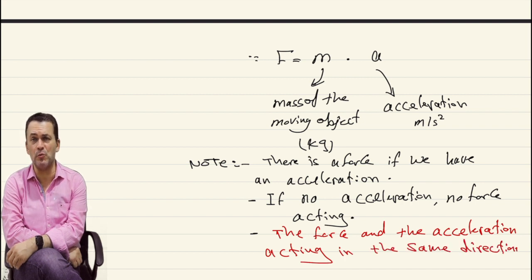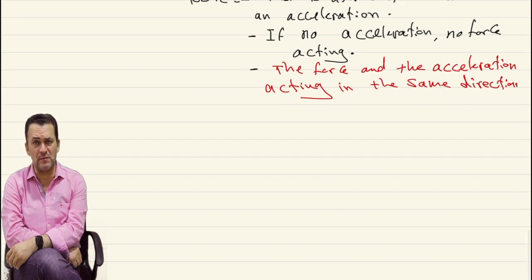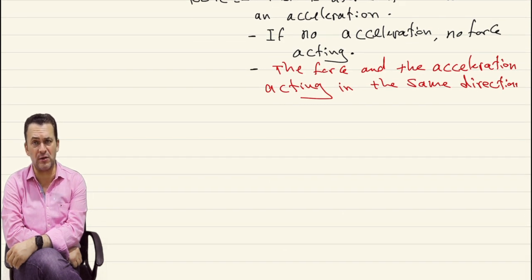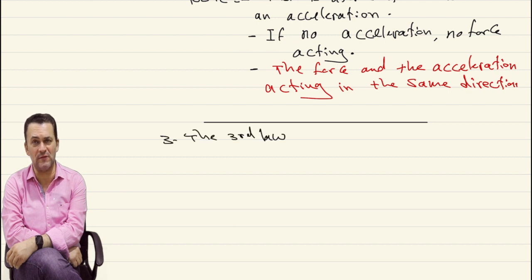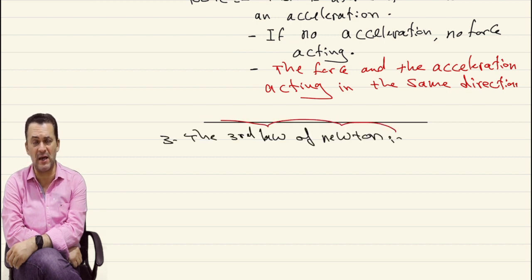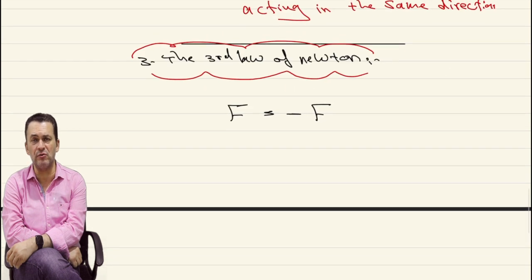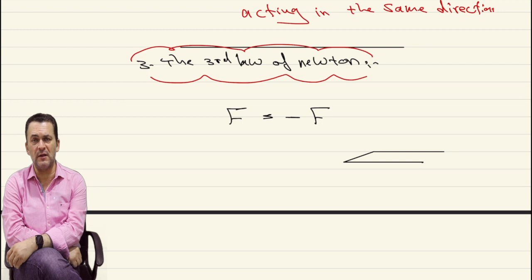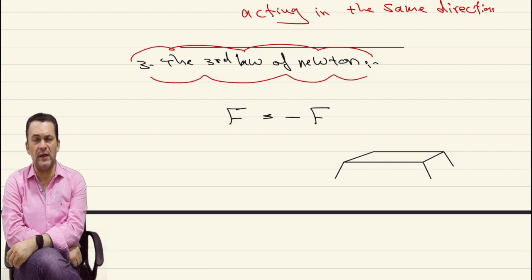When it comes to the third law of Newton, we say any action has its reaction, opposite in direction and equal in value. So we can write it as: F equals negative F. The negative here means acting in the opposite direction — it doesn't mean below or above, it just means in the opposite direction.